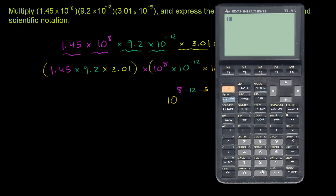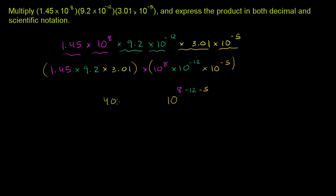Let me get a calculator. I have 1.45 times 9.2 times 3.01, which equals 40.1534. And simplifying the exponent: 8 minus 12 is negative 4, minus 5 is negative 9. So this gives us 40.1534 times 10 to the negative 9th power.